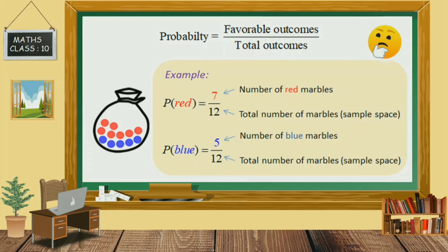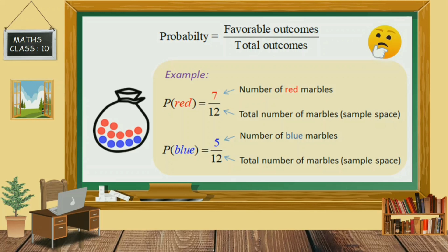The number of red marbles is 7 and the blue marbles are 5. So the total outcome is 7 plus 5, which is 12. Probability of red equals favorable outcome by total outcome, so that is equal to 7 by 12. Then, probability of blue marbles equals 5 by 12. That is the answer.